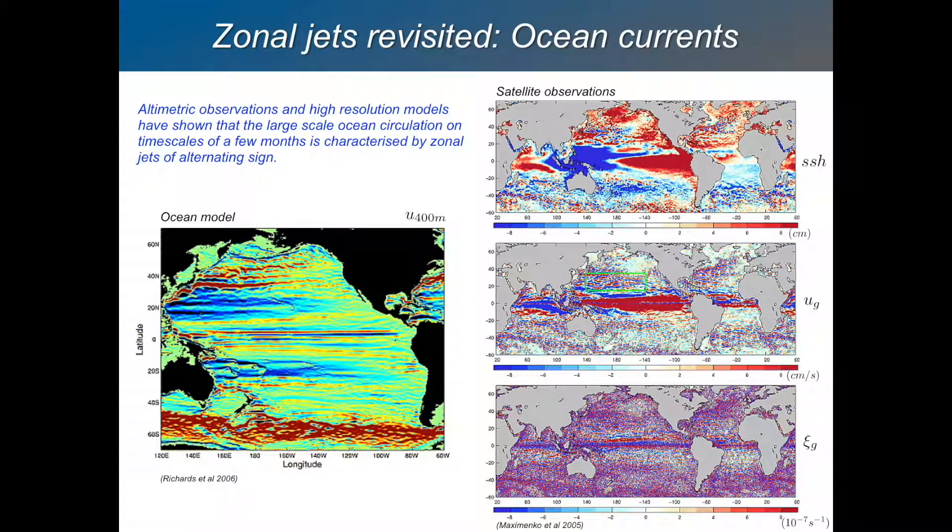Turbulence and zonal jets. Here's a picture of a long simulation with a numerical model of the ocean zonal flow at 400 meters depth. If you look at the ocean circulation, what you'll see depends on the timescales you look at. If you look at an instantaneous snapshot of the flow, you'll see a sea of eddies, just little round blobs everywhere.